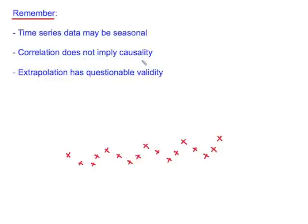Secondly, correlation does not imply causality. Just because there's a relationship between two variables does not mean that one causes the other. In the example we've just looked at, it's fairly obvious that the passage of time alone does not cause pollution levels to rise. There are clearly other factors at work. But this is a general comment when working with bivariate data.